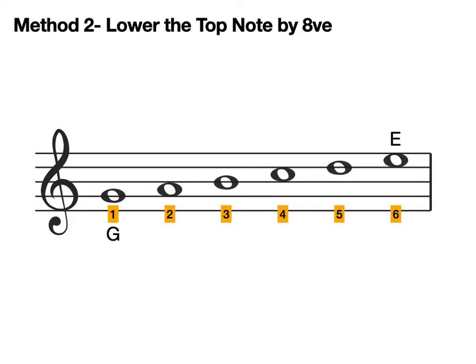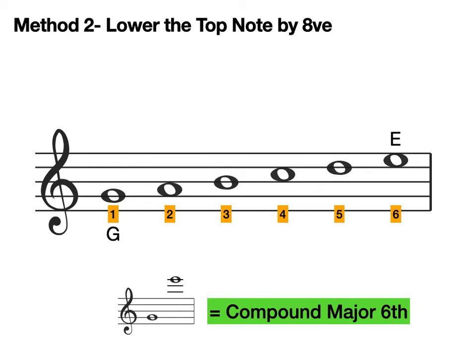Now what is the distance between these two notes? Let's write out the beginning of G major. As you can see, E is the sixth note of G major. And it is in the G major scale, making this a major sixth. But remember, our original interval was larger than an octave.